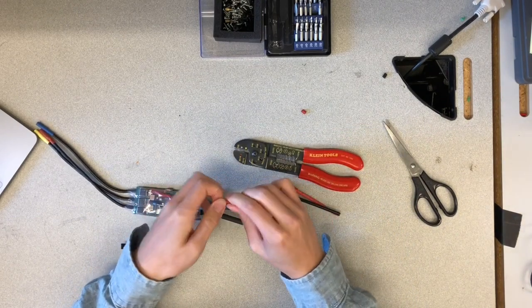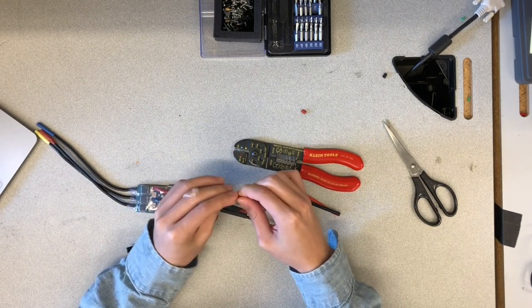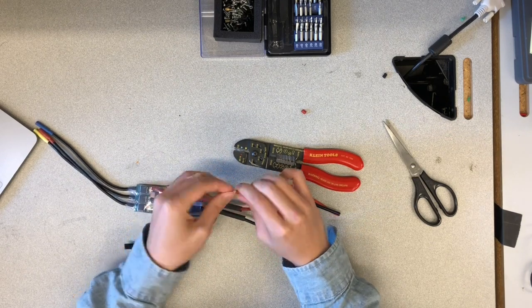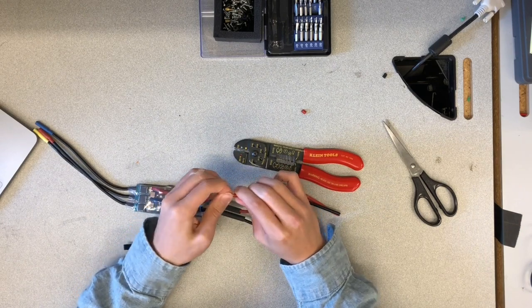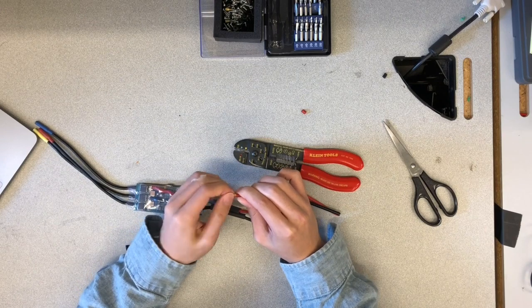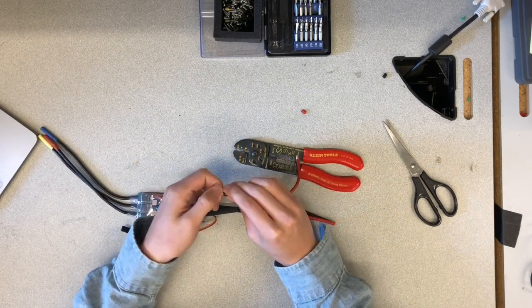For each stripped wire, twist the wire strands into a tight bunch such that they can fit inside the solderless wire connectors. As you can see, this process may take a while.